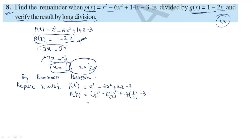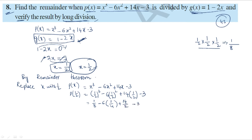1 by 2 whole cube is 1 by 2 into 1 by 2 into 1 by 2, which gives 1 by 8. So we have 1 by 8 minus 6 of 1 by 4 plus 14 into 1 by 2 minus 3, which simplifies to 1 by 8 minus 3 by 2 plus 7 minus 3.